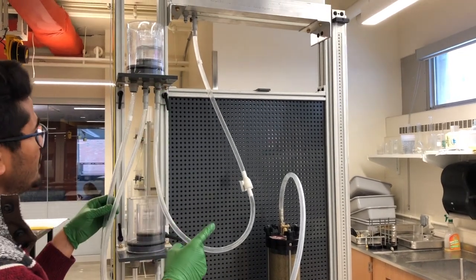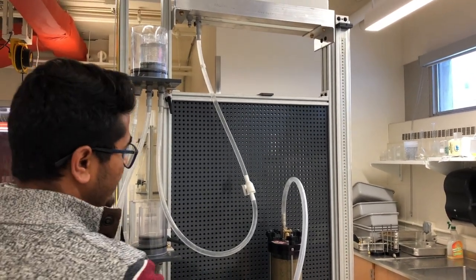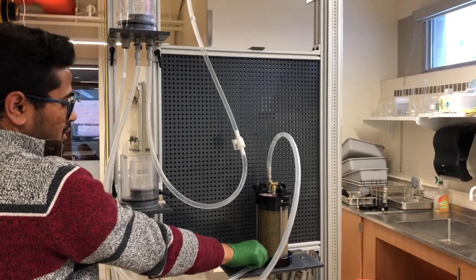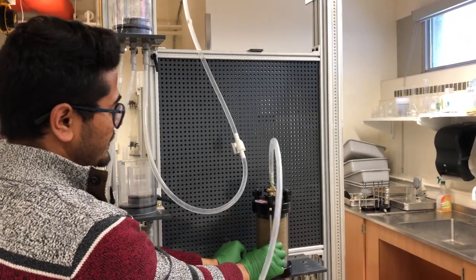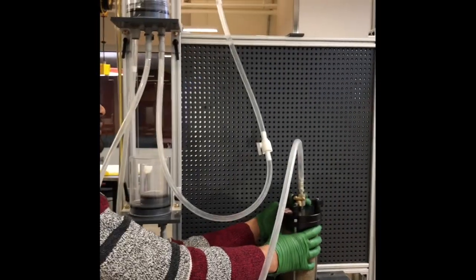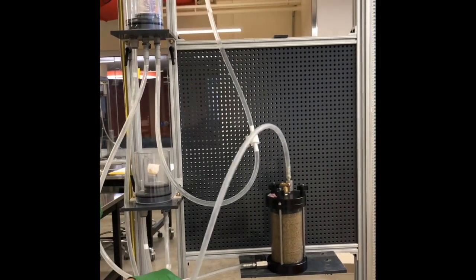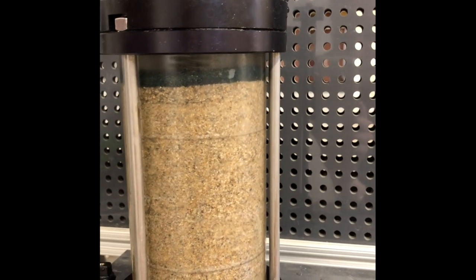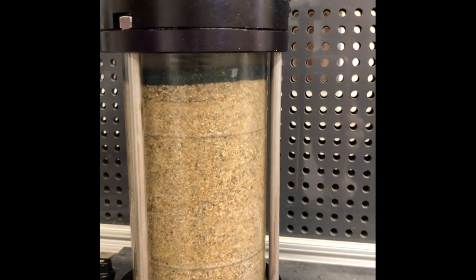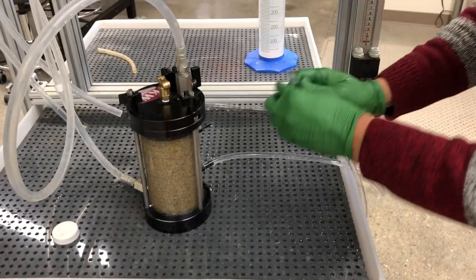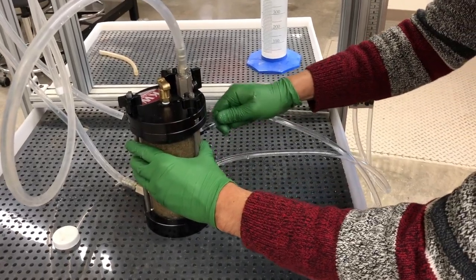Turn on the valve and allow water to pass through and fill up into the upstream reservoir. There should be no air bubbles in any of the tubes. Open all the valves and allow the soil to saturate. Connect the two manometers to the permeability cell.